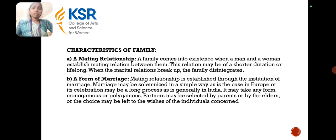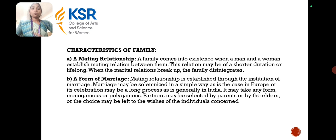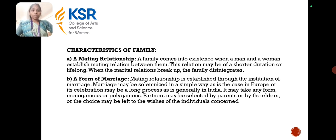Next are the characteristics of the family. This includes a mating relationship and a form of marriage. A mating relationship means family comes into existence when a man and a woman both accept a mating relationship between them, and this relationship may be of shorter duration or lifelong. A form of marriage is established through the institution of marriage, which may be solemnized in a simple way as in Europe, or may be a long process as generally in India. Partners may be selected by parents, elders, or the choice may be left to the individual concerned.